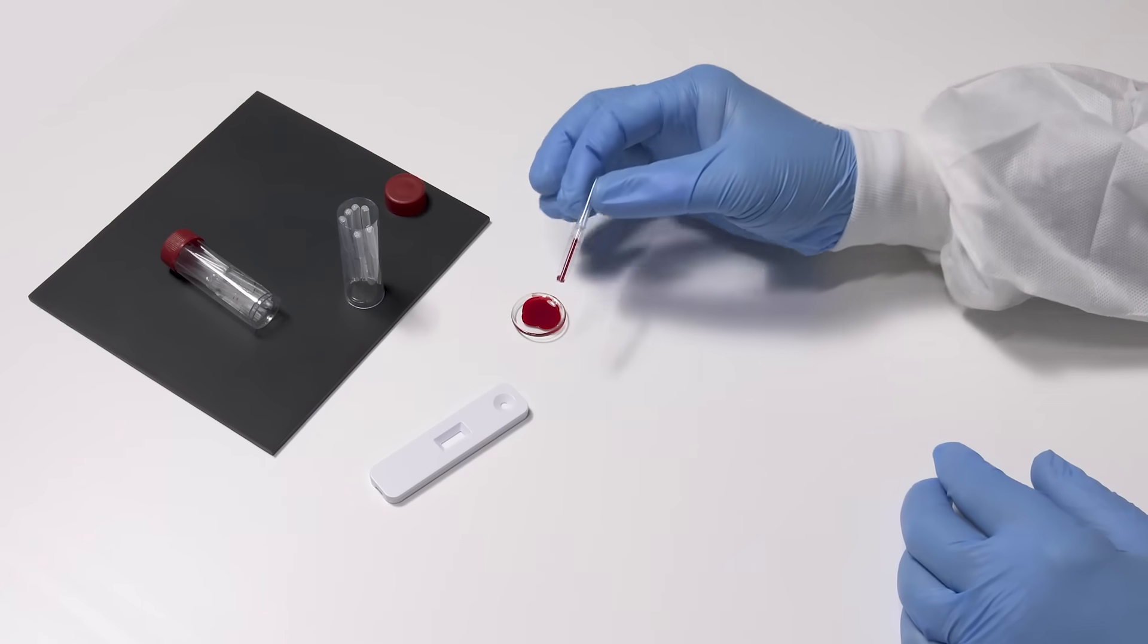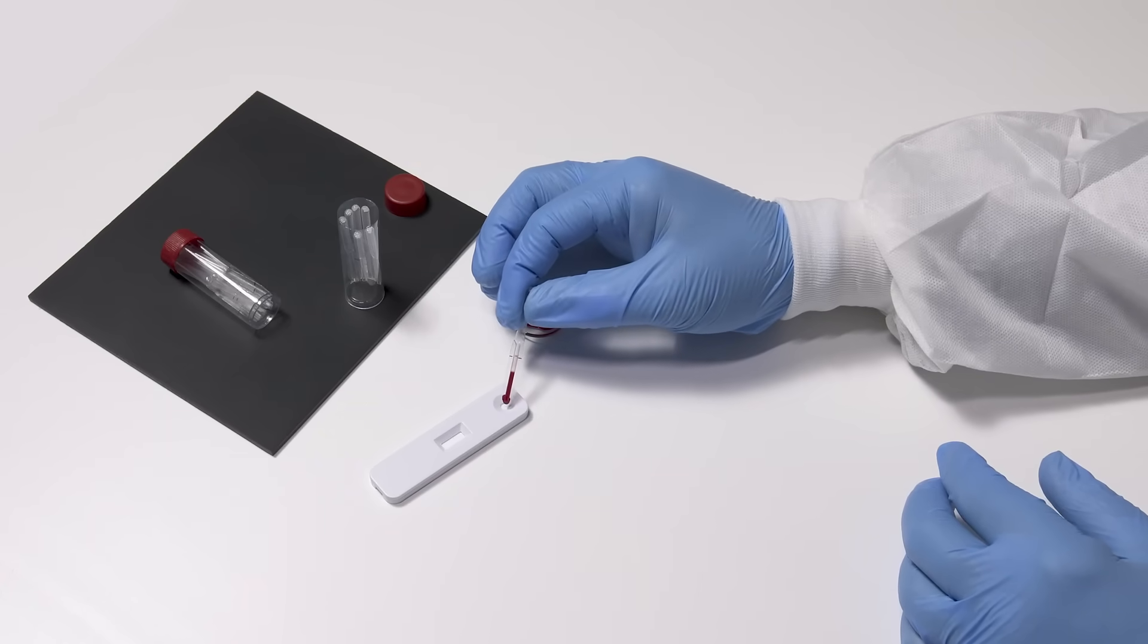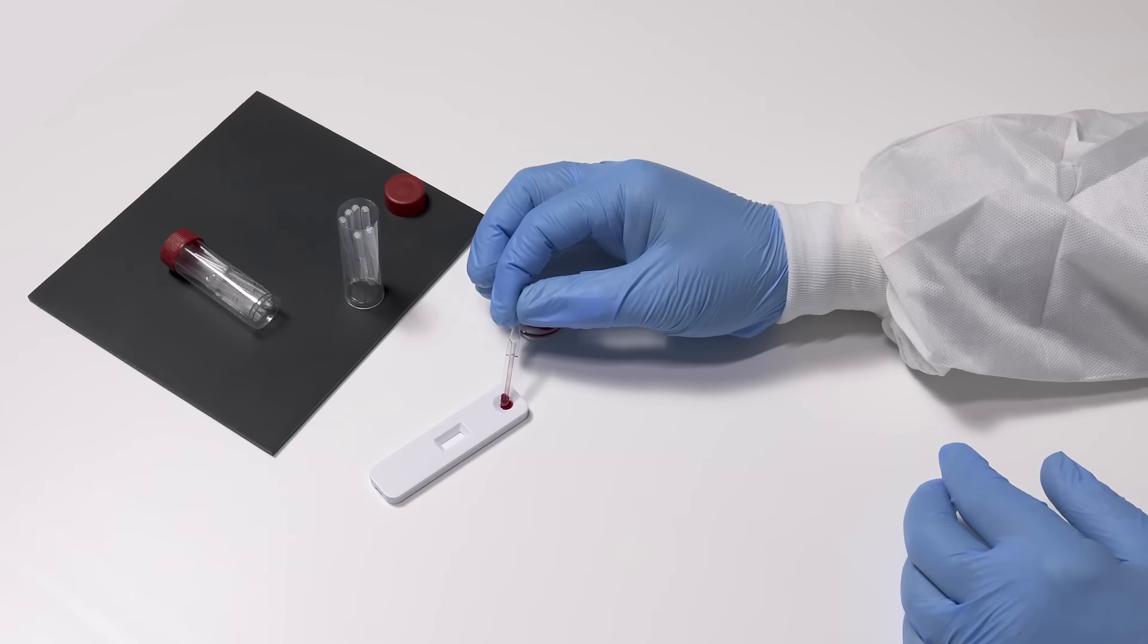Once filled, the blood is dispensed by squeezing the bulb with continuous pressure until the entire sample is delivered to the sample target area. The delivered sample has a volumetric tolerance of 0 to 10%.